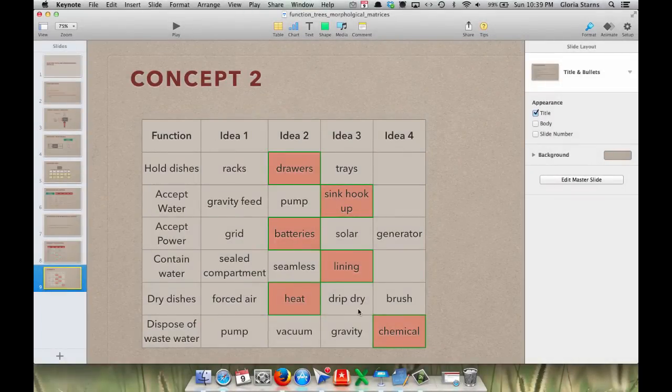So in summary, function trees help us identify the necessary functions to make a device achieve its performance requirements, and morphological matrices uses those same functions to help us think of different ideas that we combine to create numerous concepts.